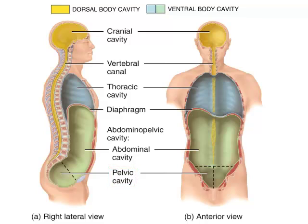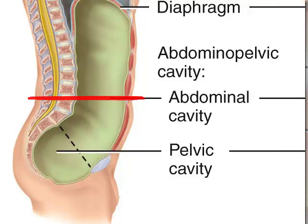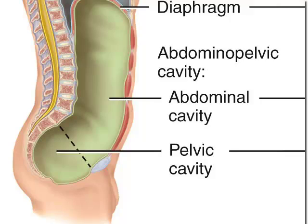One question that's continually flummoxed students — because you need to develop the ability to imagine these diagrams in three dimensions — is: what happens if we subdivide the human body along the line of the belly button? Which cavities do we hit? You should be able to see from this diagram that the level of the belly button is about where the leader line is for the abdominal cavity, and if we cut at that level we're going to hit the abdominal cavity and the dorsal body cavity as well.